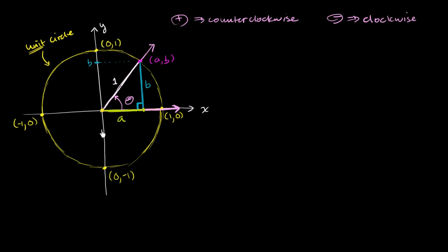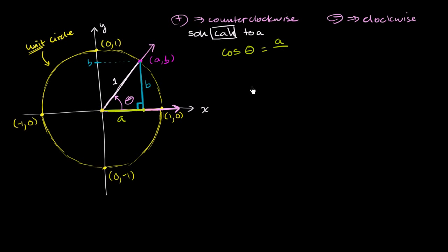What is the cosine of my angle going to be in terms of a's and b's? To think about that, we just need our SOH CAH TOA definition — that's the only one we have now, and we are actually in the process of extending it. The CAH part helps us with cosine: cosine of an angle equals the length of the adjacent side over the hypotenuse. The adjacent side has length a, and the hypotenuse has length 1. So the cosine of theta equals a — the x-coordinate where the terminal side of the angle intersected the unit circle.